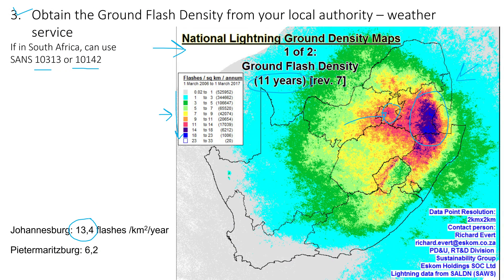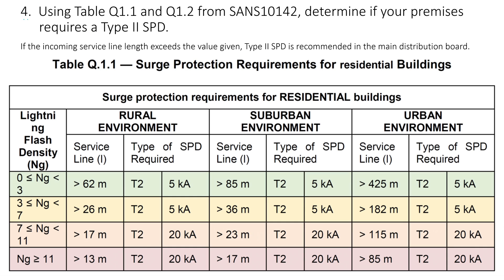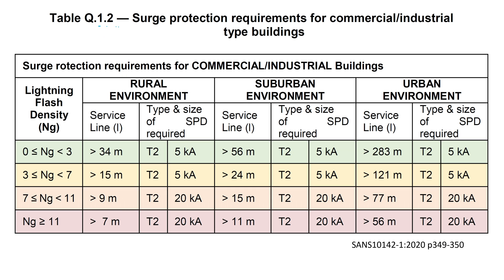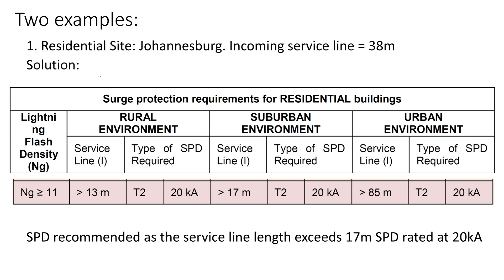Step four: using tables Q1.1 and Q1.2 from the standard, determine if your premises requires a Type 2 SPD. Table Q1.1 is for residential buildings while Q1.2 is for commercial or industrial buildings, and the measures differ between them, which will inform your decision.